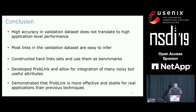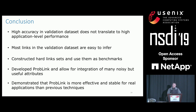To conclude, we showed that high accuracy in the validation dataset does not translate to high application-level performance. We used a very simple algorithm to demonstrate that most links in the validation dataset are easy to infer, and that small improvements in the validation dataset could translate to significant improvement in application-level gains. We therefore constructed hard-link sets and used them as benchmarks. We developed PropLink, which allows for integration of many noisy but useful attributes, and is more effective and stable for real applications than previous techniques. Crucially, PropLink is a framework that can be further improved by integrating more useful features.